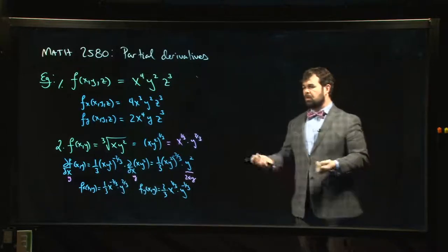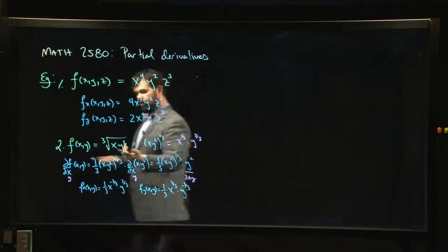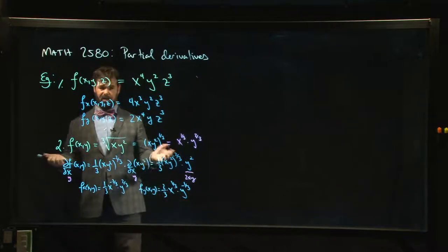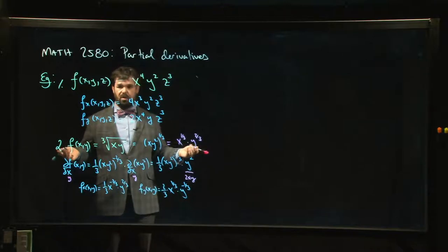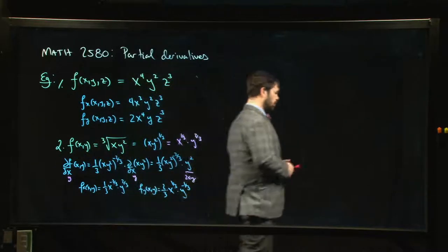Of course, sometimes you'll have no choice. You'll have to use chain rule. If it was a cosine function, let's say, on the outside, then yeah, what are you going to do? You have no choice. You've got to do chain rule. So there's not much you can do about that.